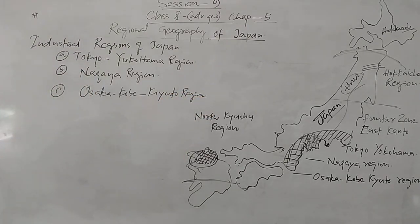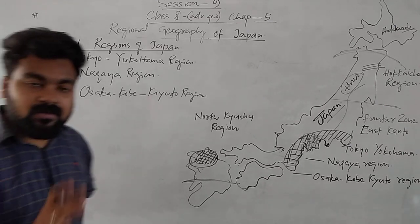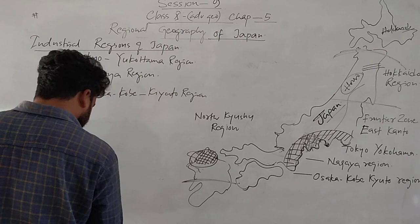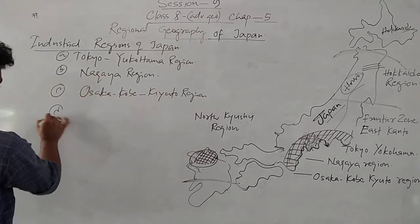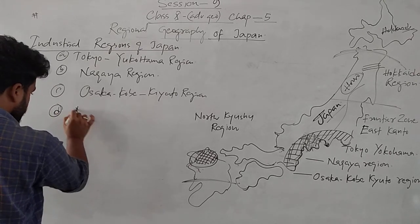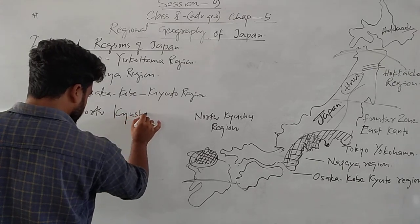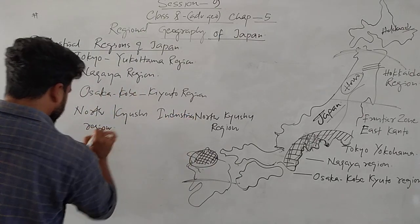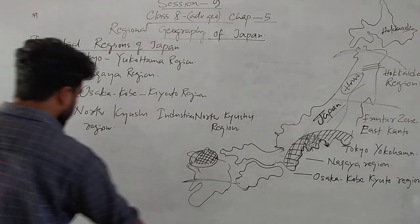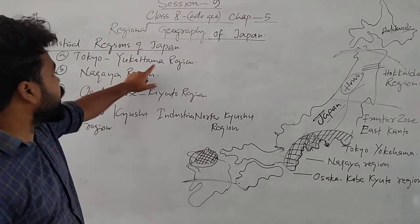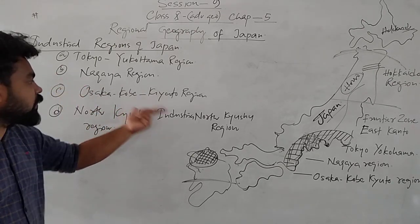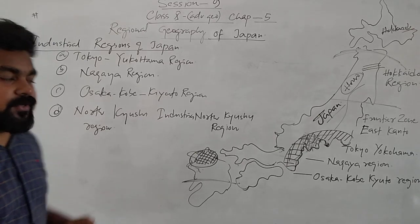The Osaka-Kyoto region is one of the main industrial regions of Japan. If a question comes asking about the different industrial regions of Japan or asking for a brief description of the industrial regions, you should write about the Tokyo-Yokohama region, Nagoya region, and Osaka-Kyoto region. There is also a fourth region — the North Kyushu industrial region.